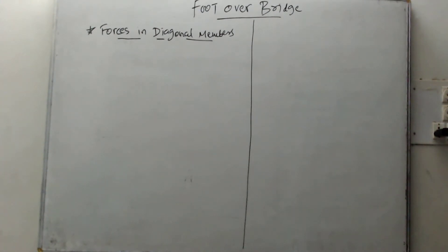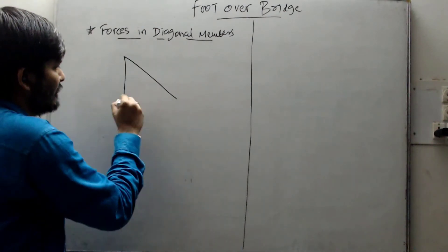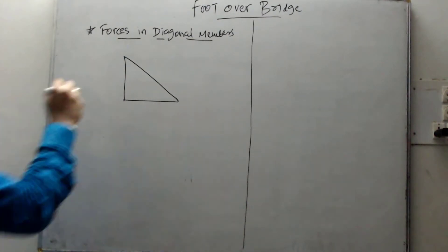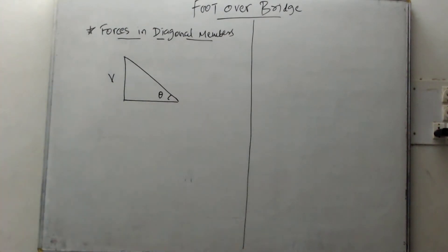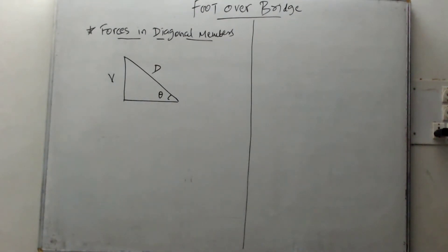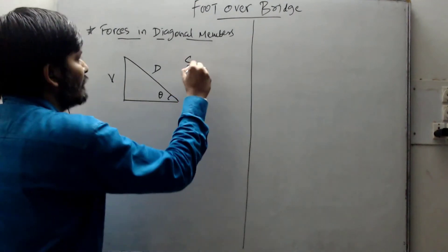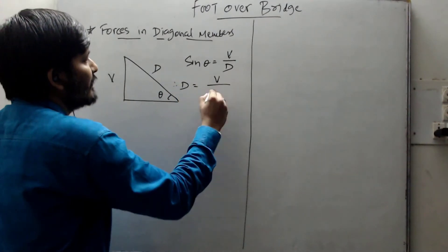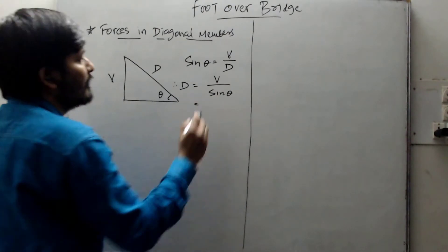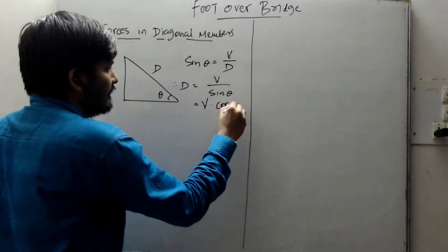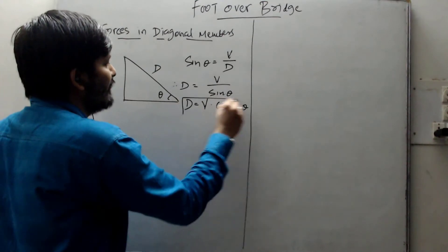If you look at your truss, there is a diagonal member. We know the vertical height V, and the angle is theta. The diagonal is D. So sine theta equals V divided by D, which means D equals V divided by sine theta, or equivalently D equals V times cosec theta.